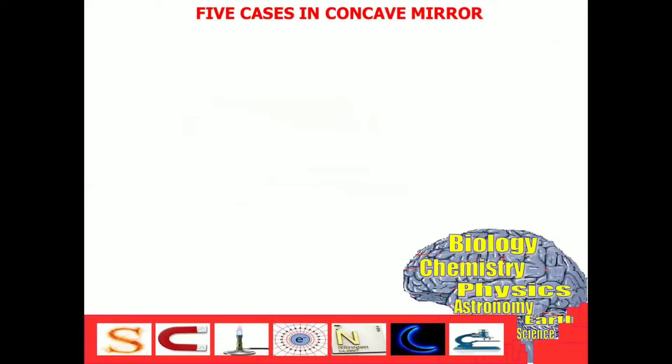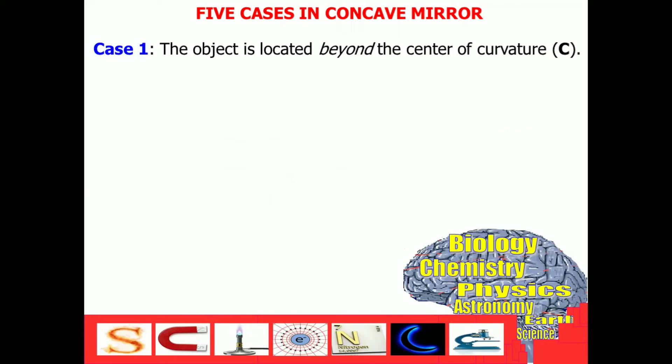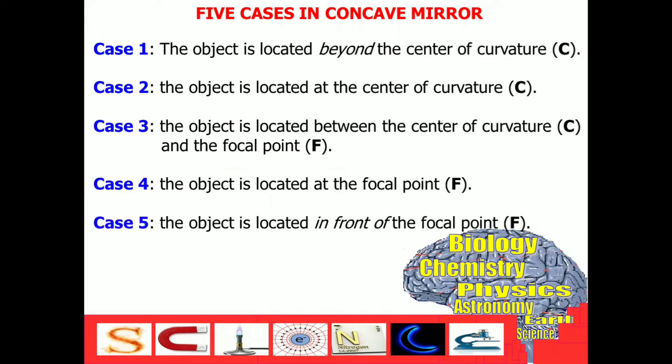However, we have several cases for concave mirror. And what we have shown here is our case number one. The object is located beyond the center of curvature. And again, the result is like this. So, we have other four cases to solve. Case number two, three, four, and five. To visualize these cases, let's have the next slide.